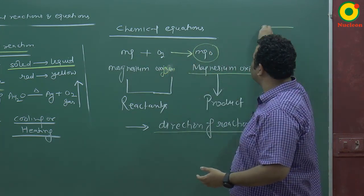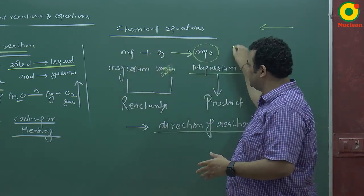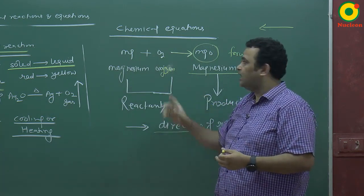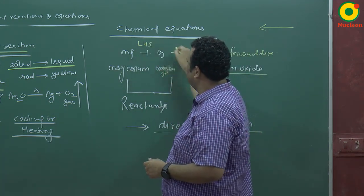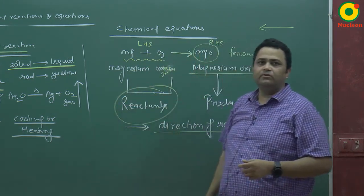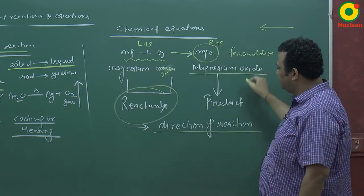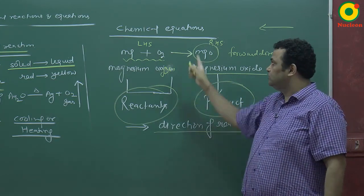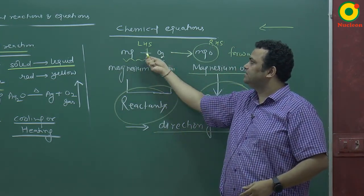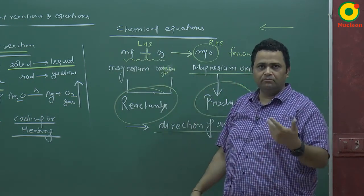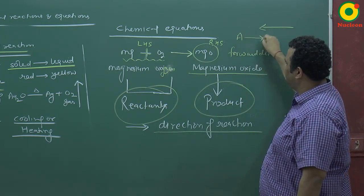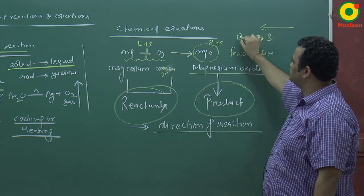If the arrow points the other way, the reaction goes in the backward direction. The left-hand side of the arrow contains reactants, and the right-hand side contains products. Multiple reactants are separated by a plus sign. So if A → B, then A is the reactant and B is the product, meaning the reaction goes from A to B. If the arrow is reversed — B → A — then B becomes the reactant and A becomes the product.